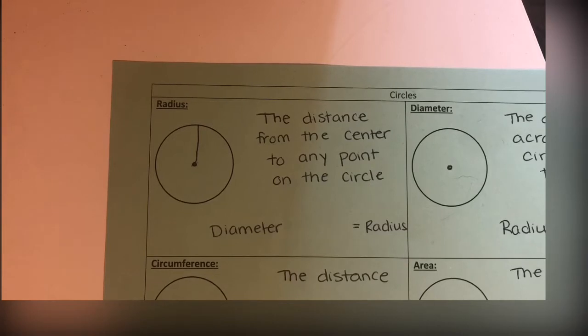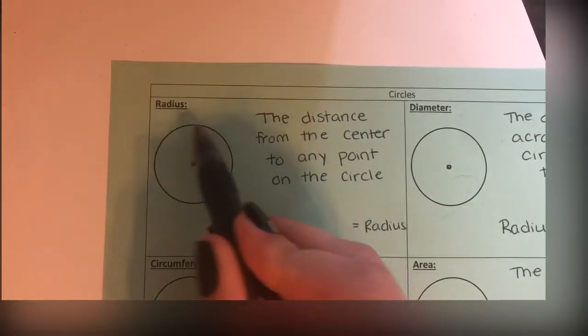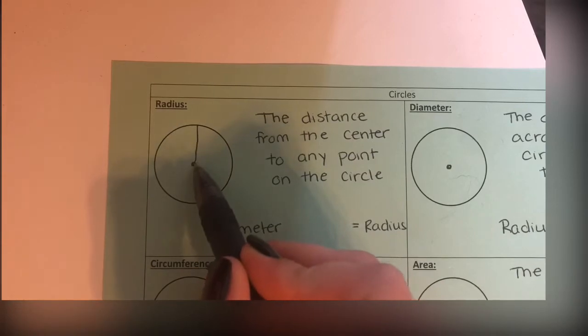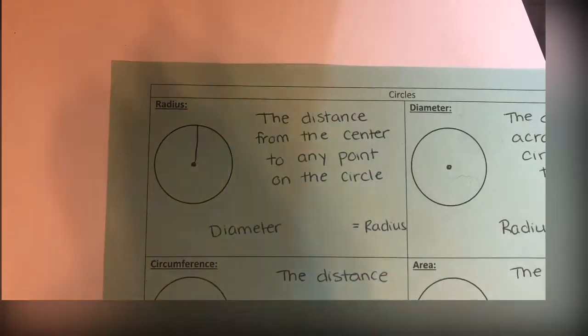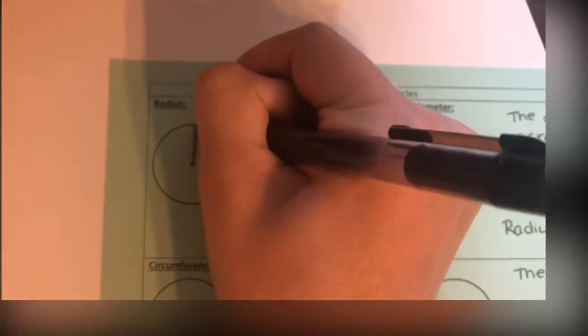First, we have two kinds of definitions, and then two things we're going to be calculating, which is circumference and area. Let's start here with radius. When we are measuring things with circles, we have a point in the middle, and the first thing we have is radius. It's this line right here.